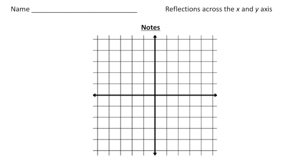Hey everybody, Dr. Nelson here. This lesson is about something called a reflection. Earlier you learned about different types of transformations — a reflection is a type of transformation. So first let's take a look at this coordinate grid and do a quick reminder about some of the parts: the line that's horizontal is the x-axis, and the line that's vertical going up and down is the y-axis.